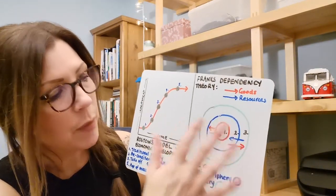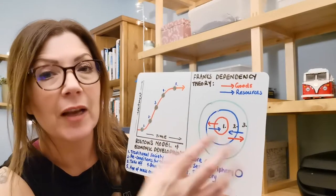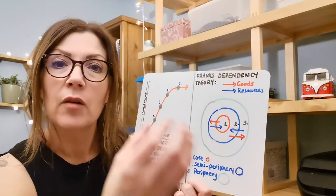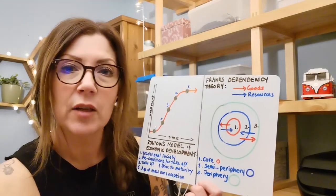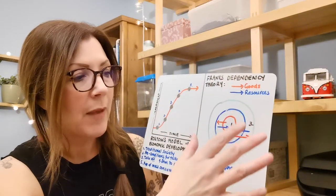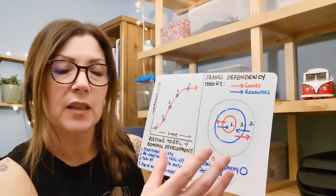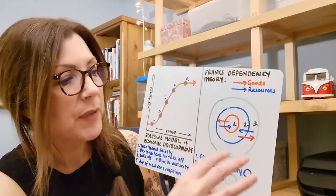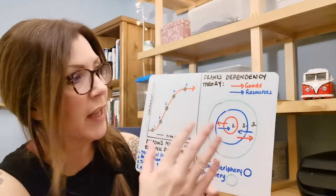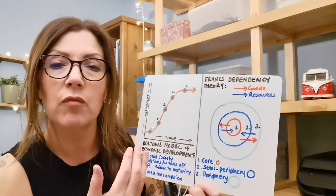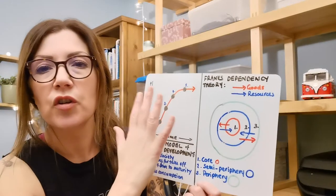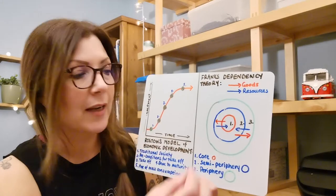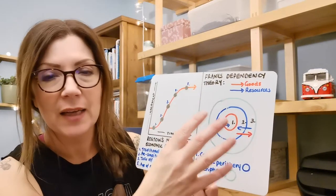The periphery will stay poor and won't be able to develop because we need those raw materials. What we also do is we resell those manufactured and processed goods back to the periphery. The periphery isn't able to manufacture them themselves, so they buy those goods back from us at a higher cost. This keeps poorer countries poor and richer countries rich. That's where Frank had a fundamental issue with Rostow, because he saw that this wasn't true. Colonial problems in the past and colonial factors have an impact even today.